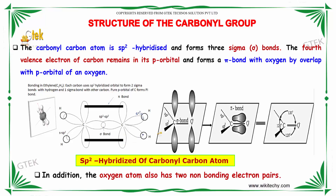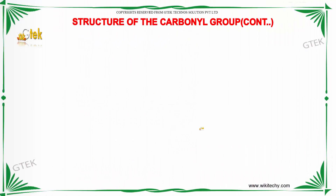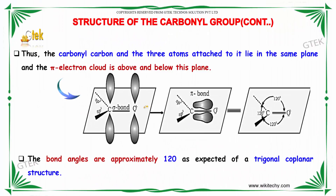The oxygen atom also has two non-bonding electron pairs, as we can see here. It forms a planar structure — the carbonyl carbon and the three atoms attached to it lie in the same plane, and the pi electron cloud is above this plane.